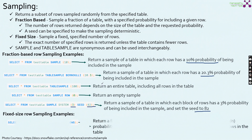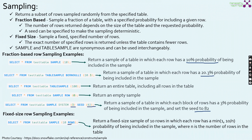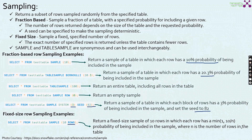Moving on to fixed size sampling, which is very evident. The difference between fraction-based and fixed size is the ROWS keyword. Here we specify SAMPLE(10 ROWS), meaning from the test_table give me exactly 10 rows. It returns a fixed size of 10 rows, with each row having a minimum probability of 1/n of being included in the sample, where n is the number of rows in the table. Predominantly, it will return 10 rows as the output of this fixed size sampling.